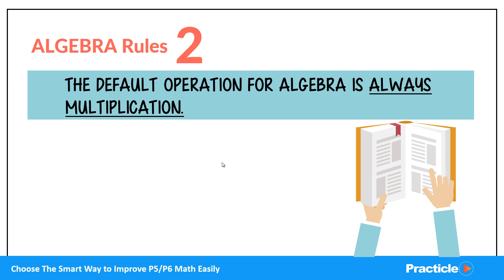So this means that if there are no signs in between a number and a letter, we can assume that they are being multiplied. So for example, here we have 2X. 2X is the same as saying 2 multiplied by X. So you see, instead of writing 2 times X over here, we simply write the expression as 2X, and it's kind of like a shortcut to us.